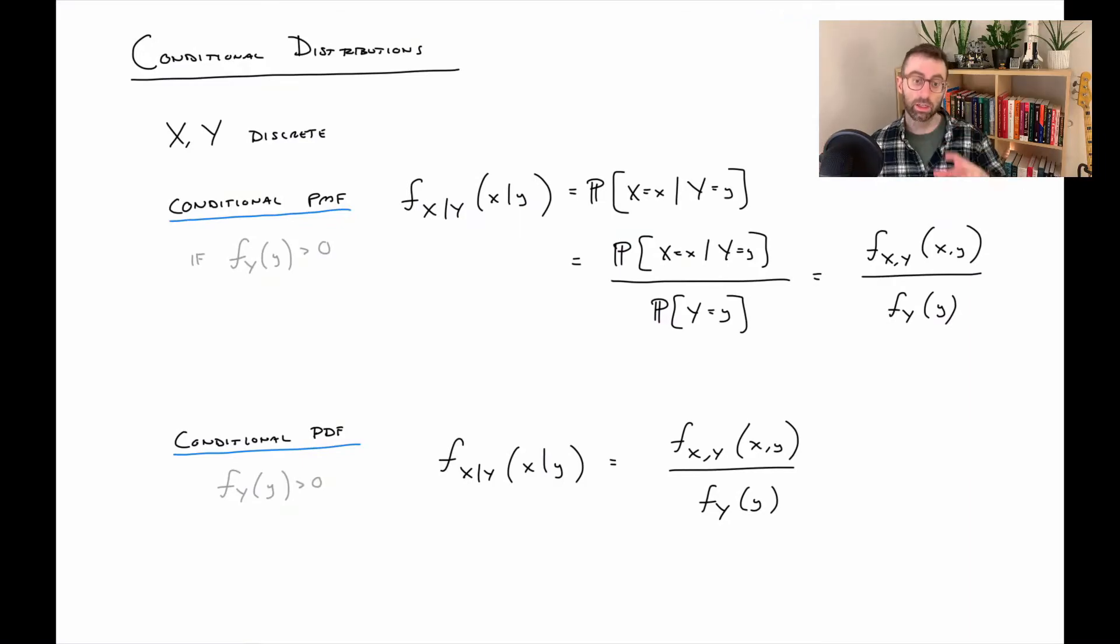Next is conditional distributions. A conditional distribution is going to say, we want to know the distribution of X when Y takes a particular value. In a case like this, Y is going to be fixed and X is the input to this function. So what we're looking at is the conditional probability mass function of X given Y. X given Y has its own distribution, and that's what we're looking at here. And then you can do a similar thing for a density function for a continuous distribution.